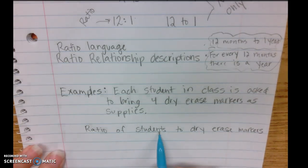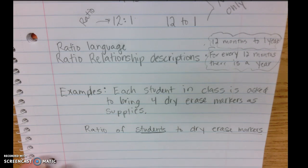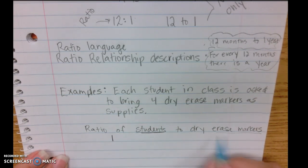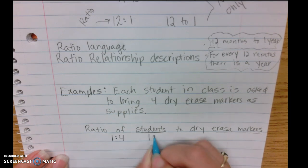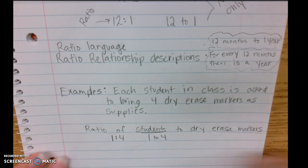Again, this order is important. So students comes first, so the number of students would be first in my ratio, which would be one, and then the dry erase markers, so one to four or one colon four.